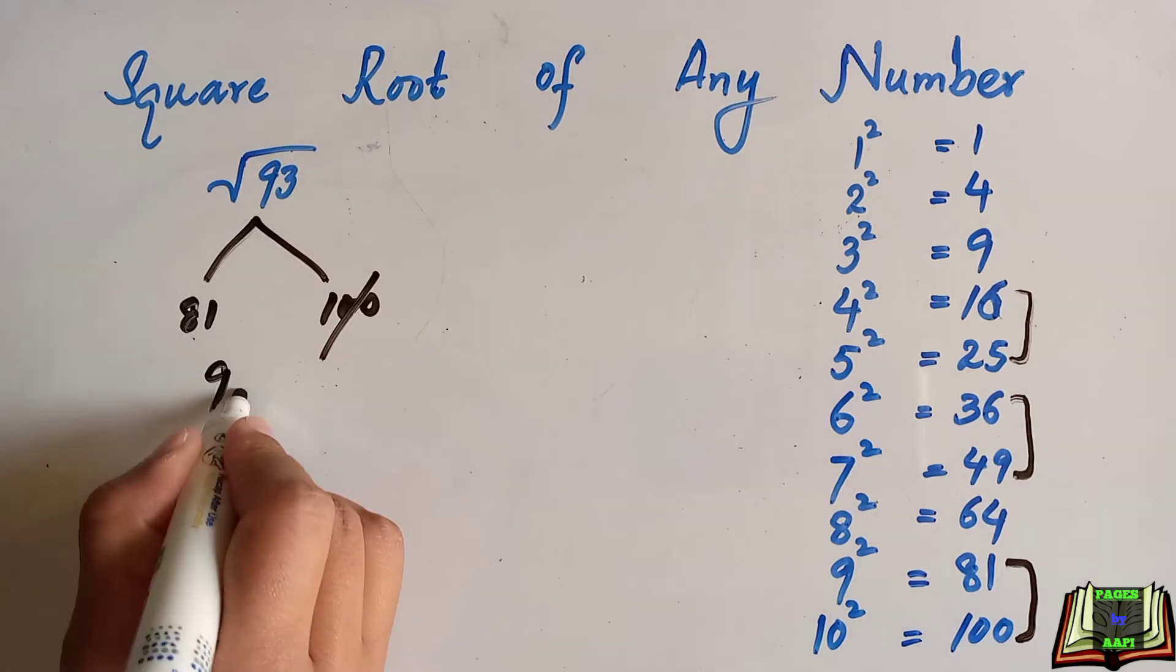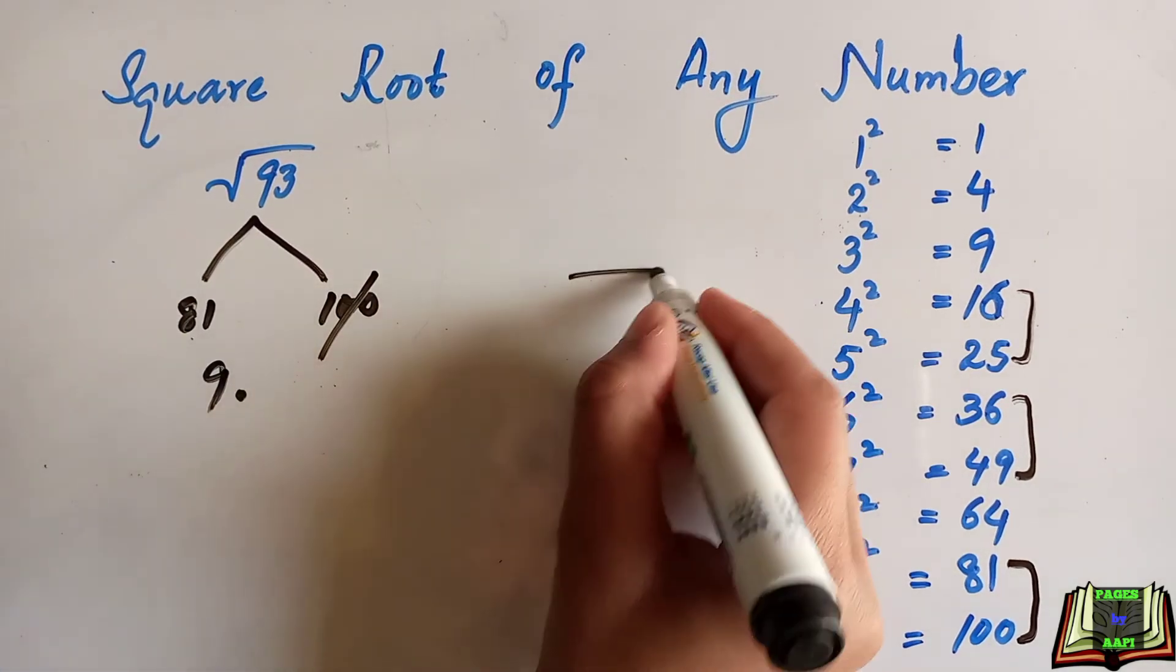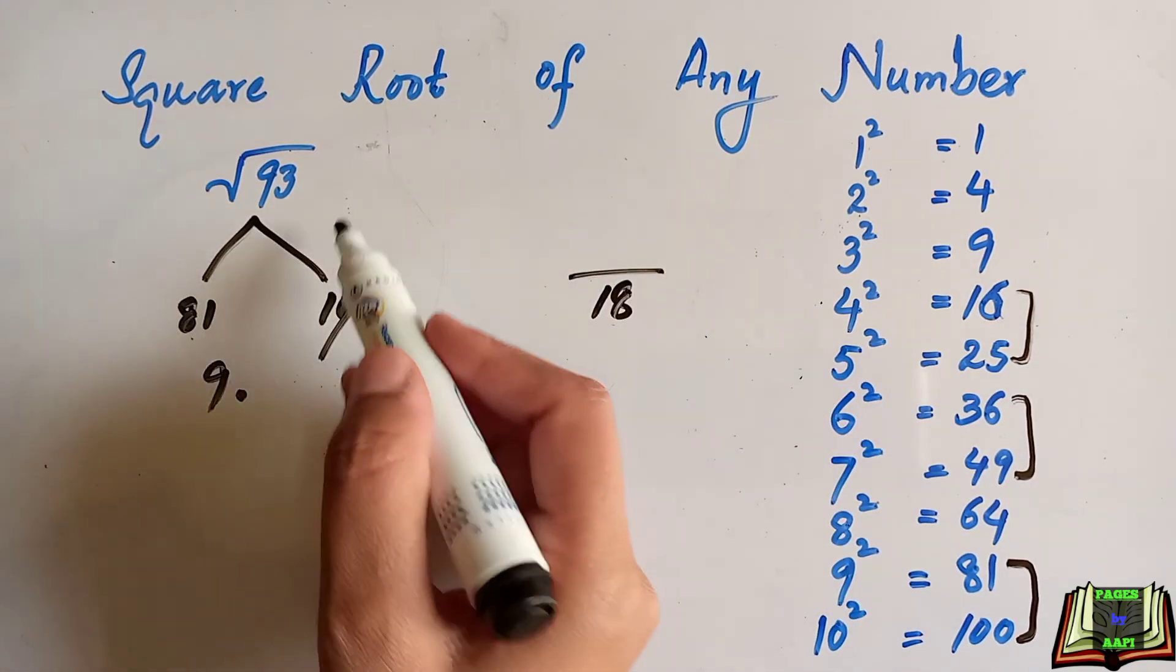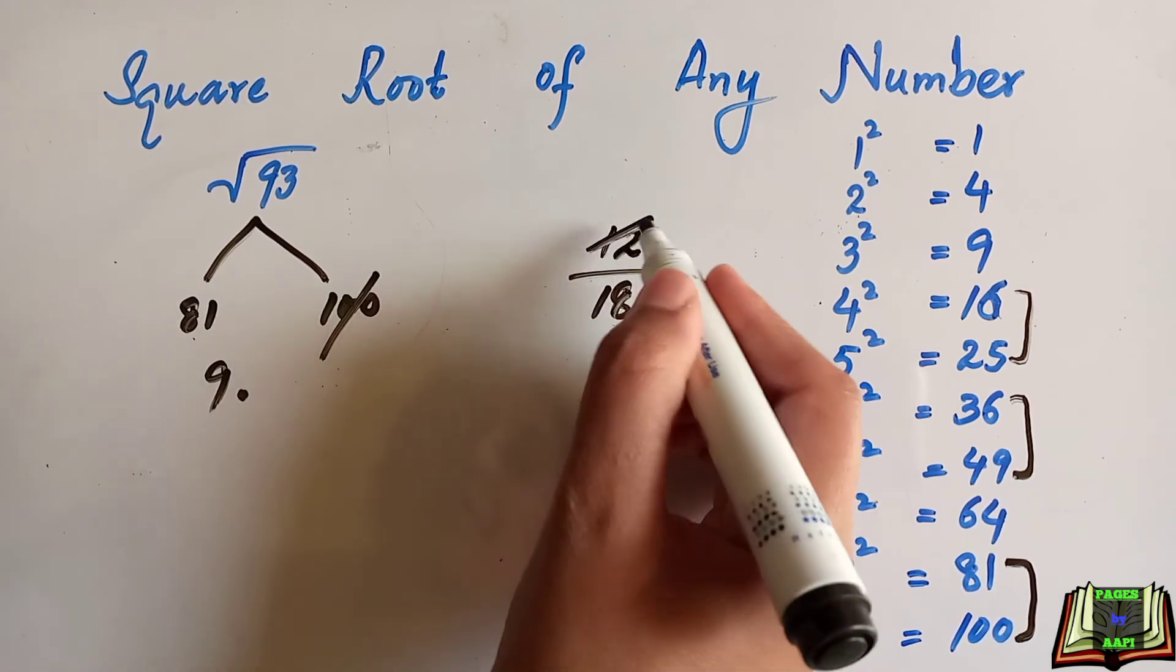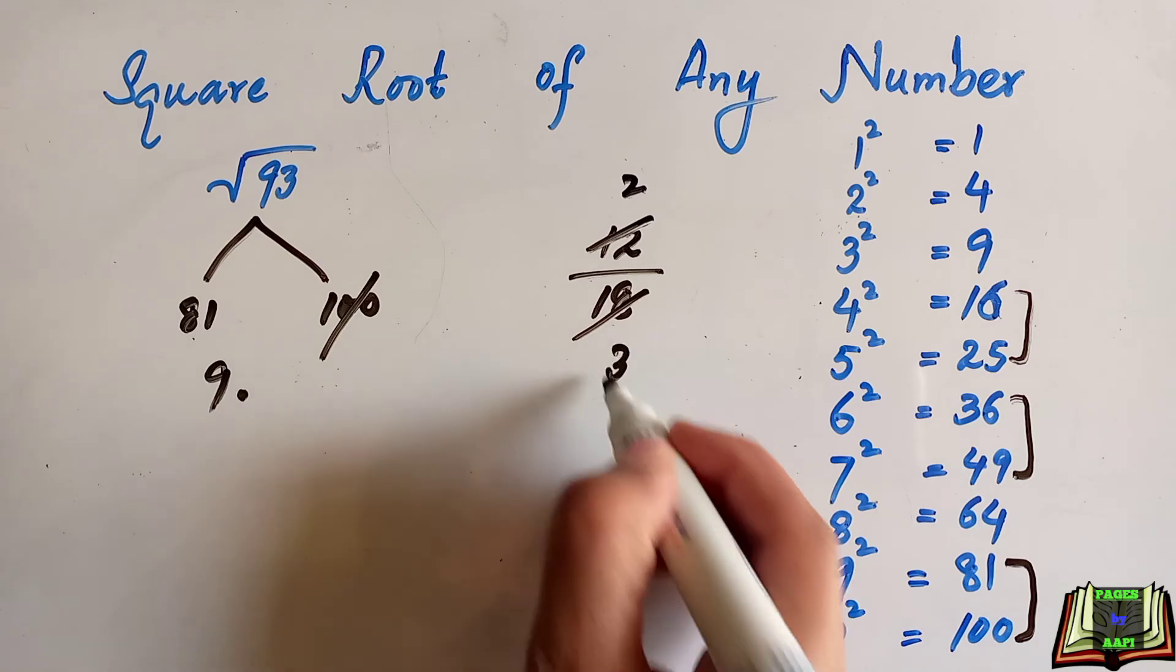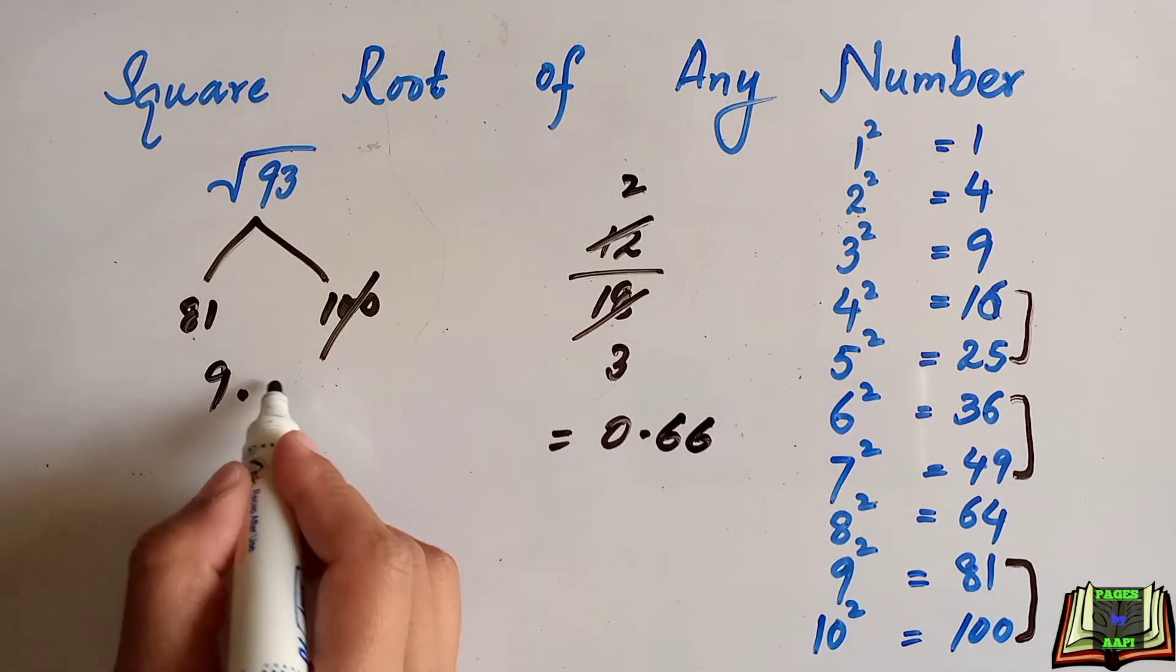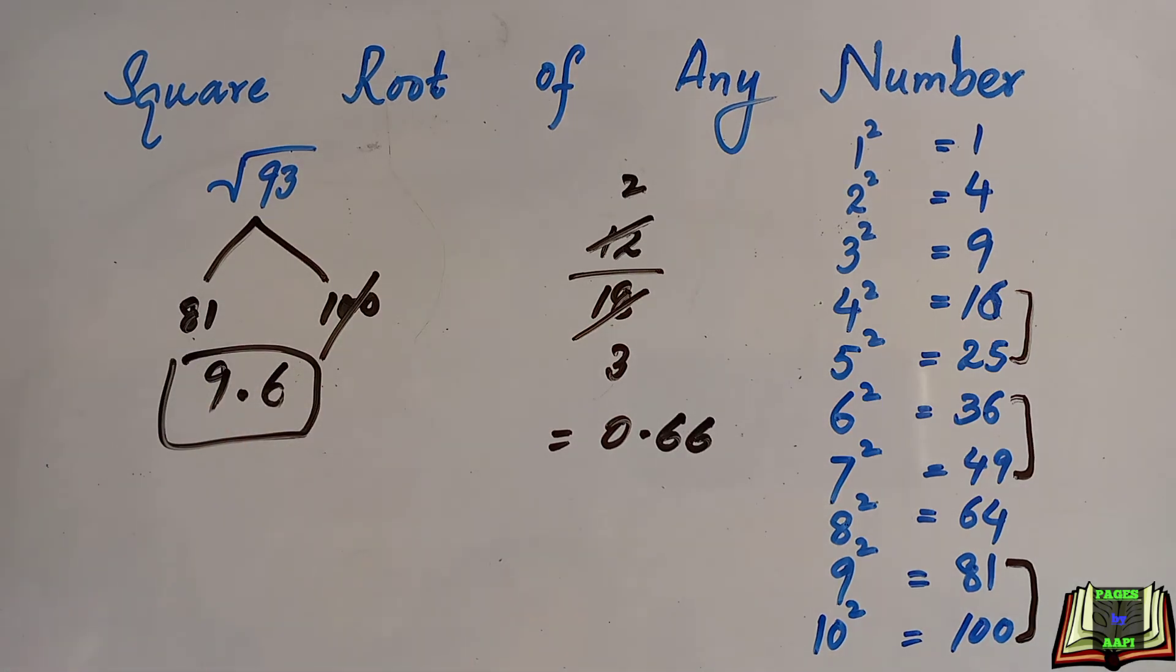For the decimal part, we use the formula: double the approximate root, which is 18. 93 minus 81 equals 12. 12 over 18 simplifies to 0.66. So 9.6 is the approximate square root of 93.